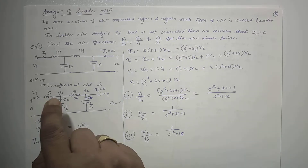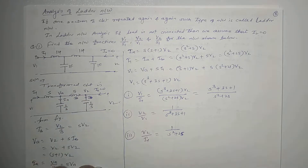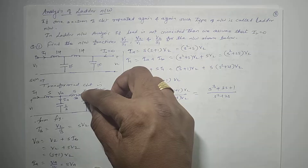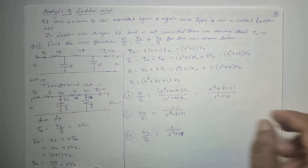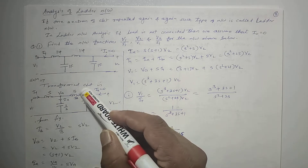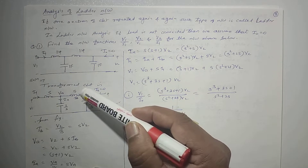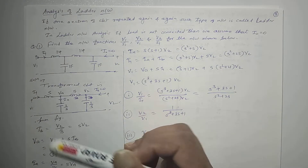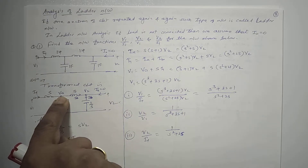Now in ladder analysis, first we have to define every node's voltage. There are two nodes. The voltage at the output node with respect to ground is V2. The voltage at the intermediate node is not given in the problem, so we define it as VA.